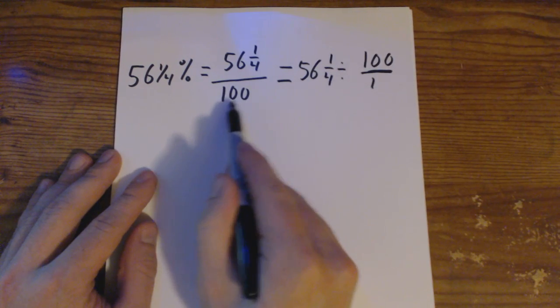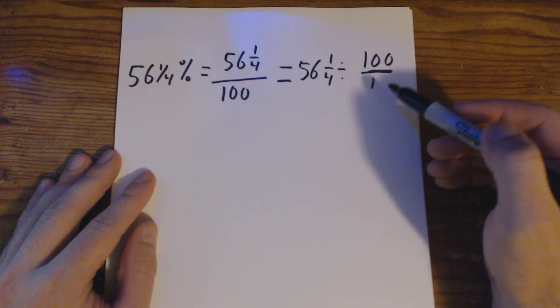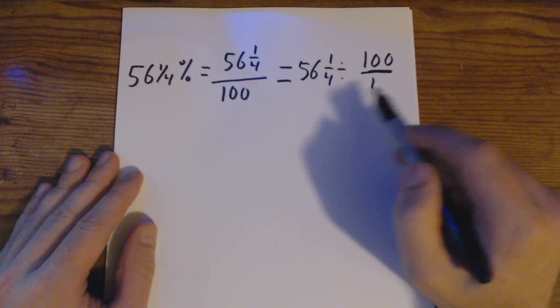Now, remember, underneath here we just have 100. Writing that as a fraction is going to be 100 over 1. Now, let's take the next step. Let's just set this up as multiplication.